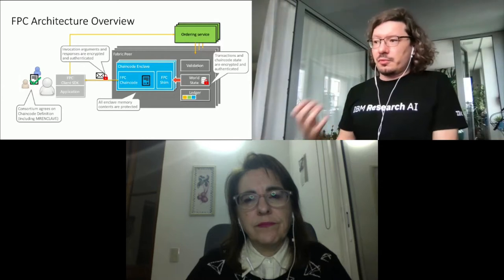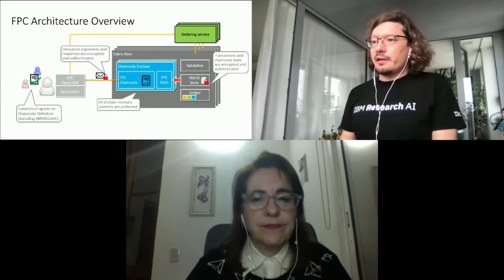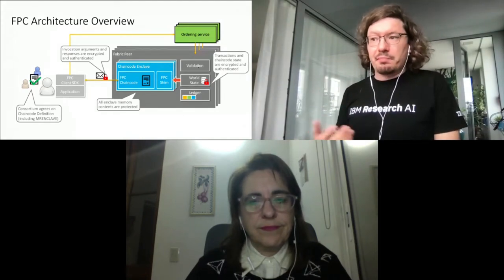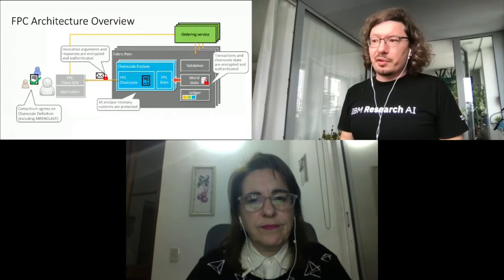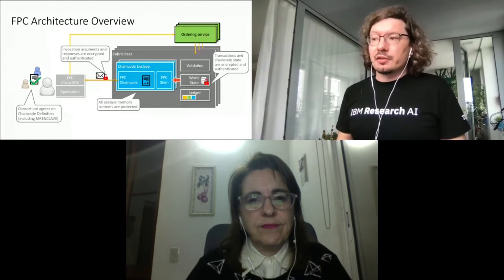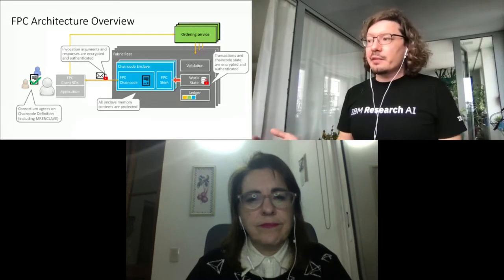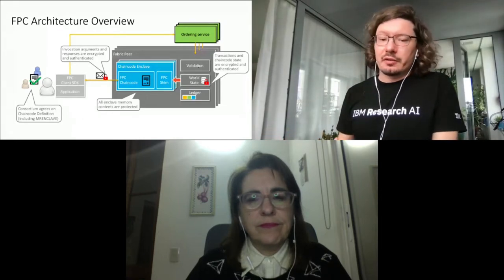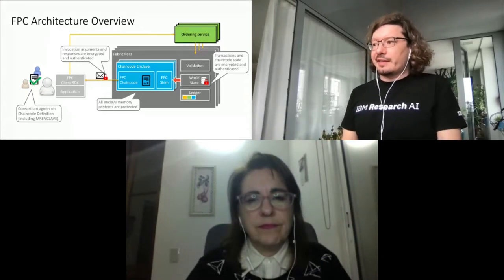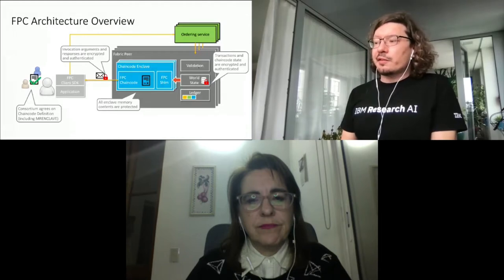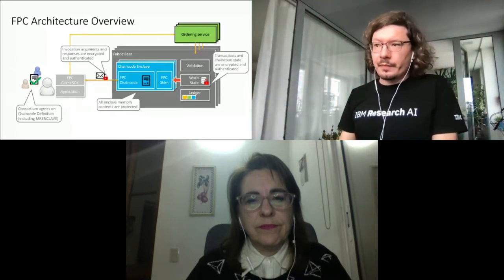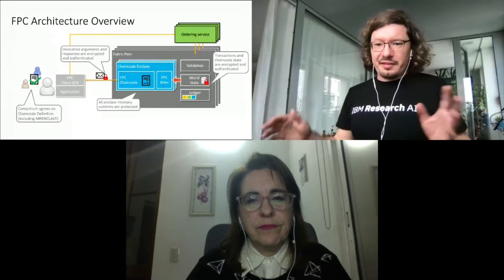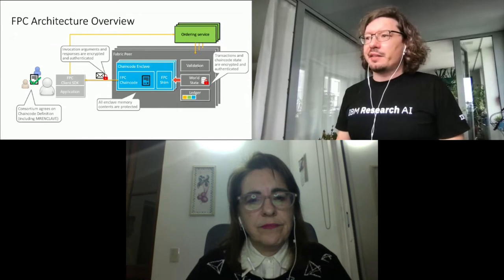In order to make chaincodes work, the chaincode needs to consume data. Our FPC client SDK is responsible for encrypting and authenticating the arguments of a transaction proposal in a way that only the FPC chaincode can decrypt it. The second part is the world state, which is retrieved by the chaincode when the application logic needs to access the state. By default, all data is encrypted when stored outside the chaincode on the world state. This basically covers the basics of how FPC, Fabric Private Chaincode, is working.